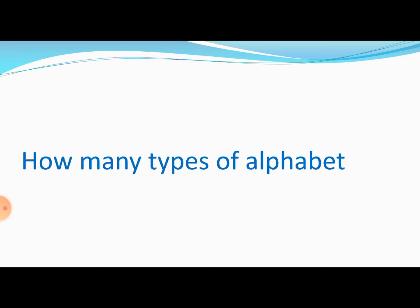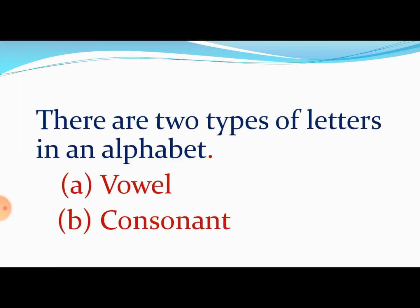Next hai — how many types of alphabet? Alphabets kitne types ke hote hain? There are two types of letters in an alphabet. Alphabets ke two types hote hain: first, vowel; second, consonant.